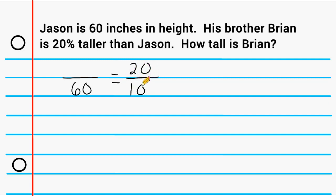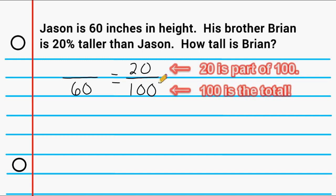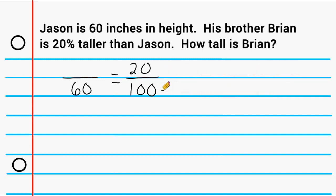Here's one way we can think about this problem. We know that 100% is considered the total or the whole, and the number on top is considered the part of the total. And 20 is a part that can fit into its whole 5 times. So whatever number we have on top will also fit into its whole a total of 5 times. So we can just take 60 and divide that by 5, which is 12.